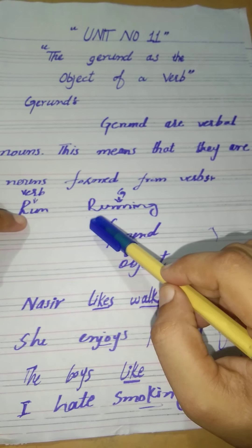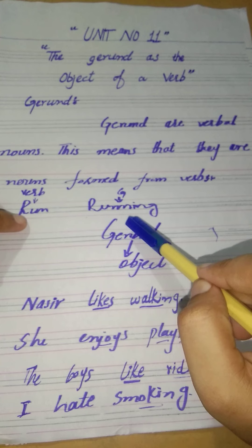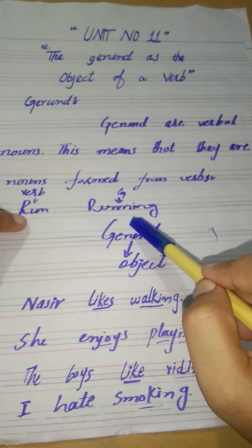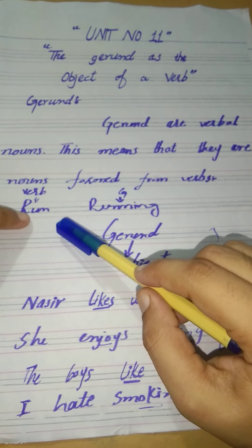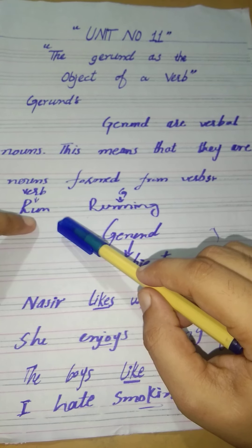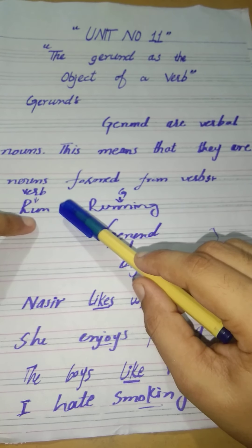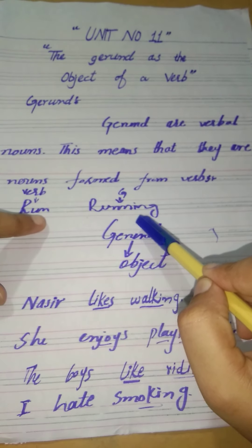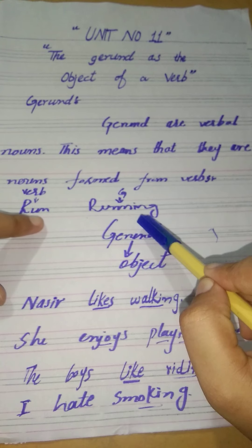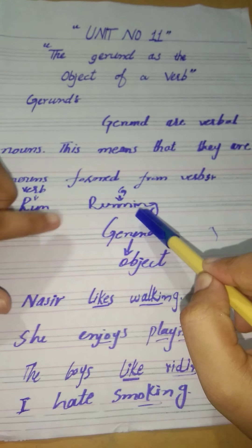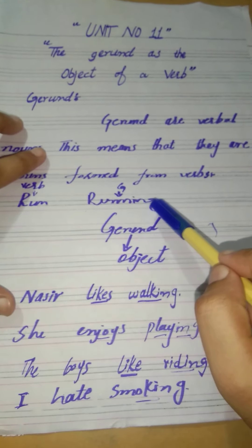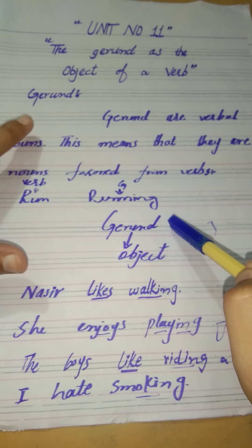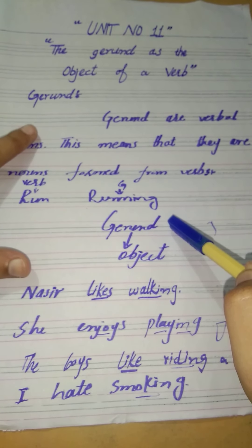We make a gerund by adding -ing to a verb. For example, the word 'run' is a verb. When we add -ing to 'run' it becomes 'running.' So 'running' is a gerund.